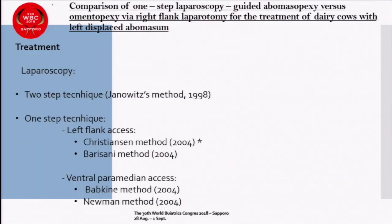Surgical techniques are the most commonly applied and developed for resolution of displaced abomasum. We have open techniques and laparoscopic techniques. Within the laparoscopic techniques, we have the two-step technique — Janowitz's method, 1998 — and four one-step techniques differing among them by access. Christensen and Barisani have access by the left flank, and Babkin and Newman have ventral paramedian access. I use the Christensen-Sermet method in my clinical practice.